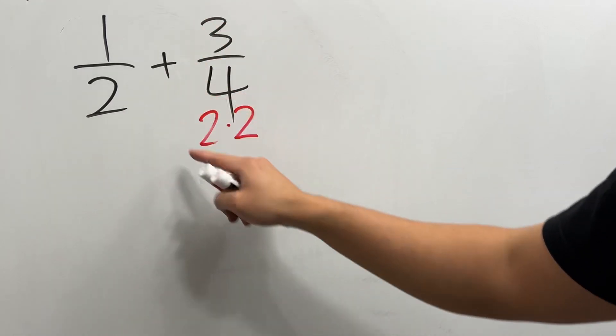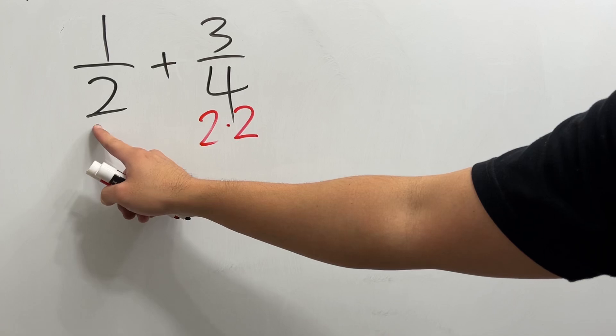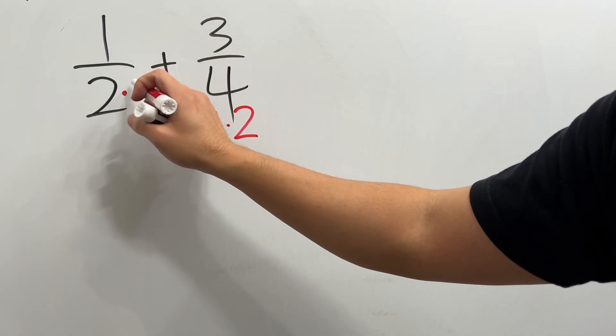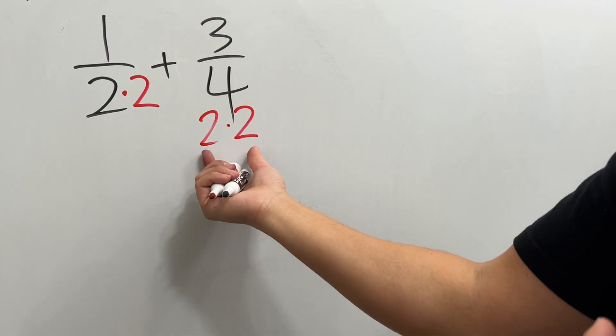Now you see, this fraction has the denominator 2 times 2, but here we only have one 2. Therefore, we're going to multiply by another 2 here, so that it has two 2s, which is the same as that.